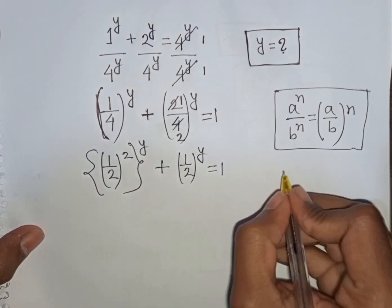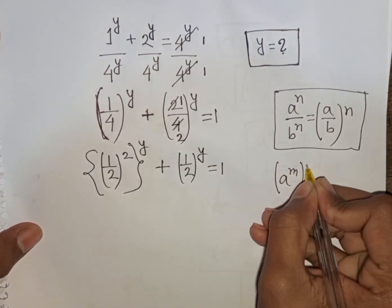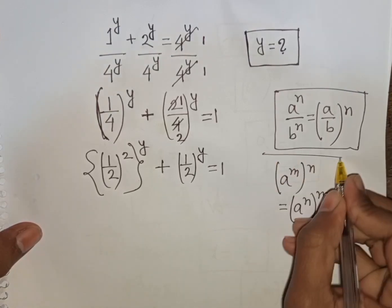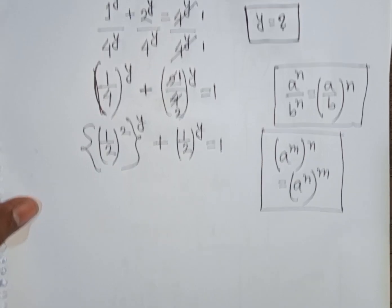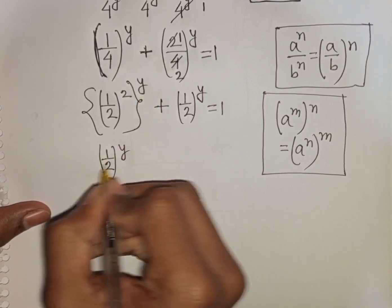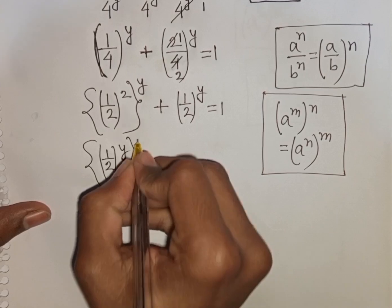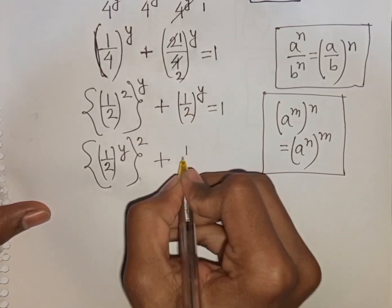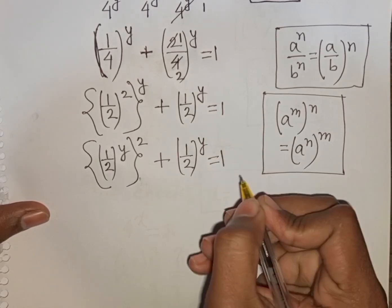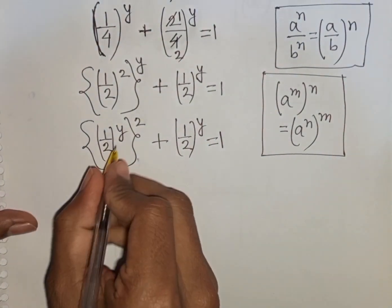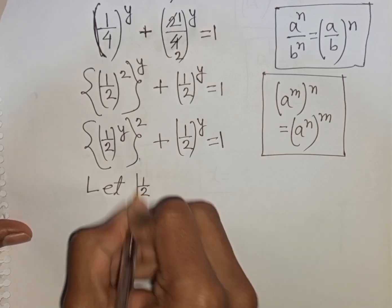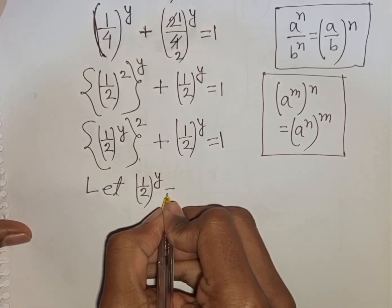We apply the exponential rule that (a power m) power n equals (a power n) power m. So we can write (1 over 2) power y, power y plus (1 over 2) power y equals 1. Since (1 over 2) power y appears in all three terms, let x equal (1 over 2) power y.